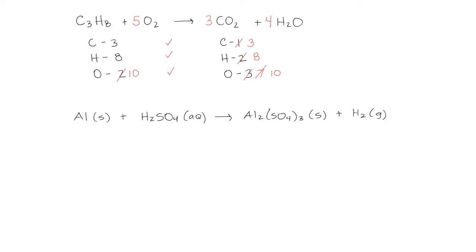Let's try one more example. Here we have the reaction of aluminum and sulfuric acid to produce aluminum sulfate and hydrogen gas. Let's start the same way by counting up all of the atoms on both sides. Aluminum on the left we have 1, hydrogen we have 2, and we can count the sulfur and oxygen separately, but if we recognize that as the sulfate group, we can count it as one group because it appears as sulfate on the product side as well.